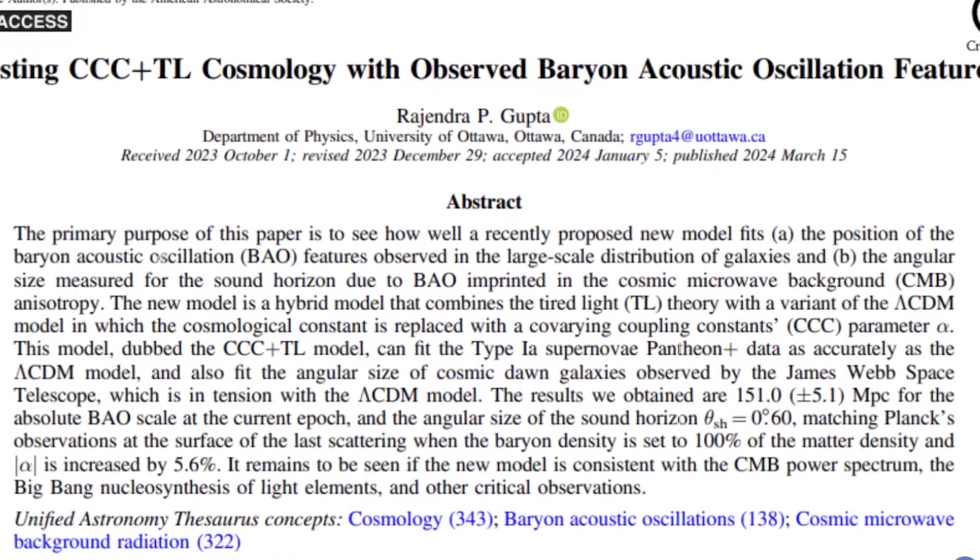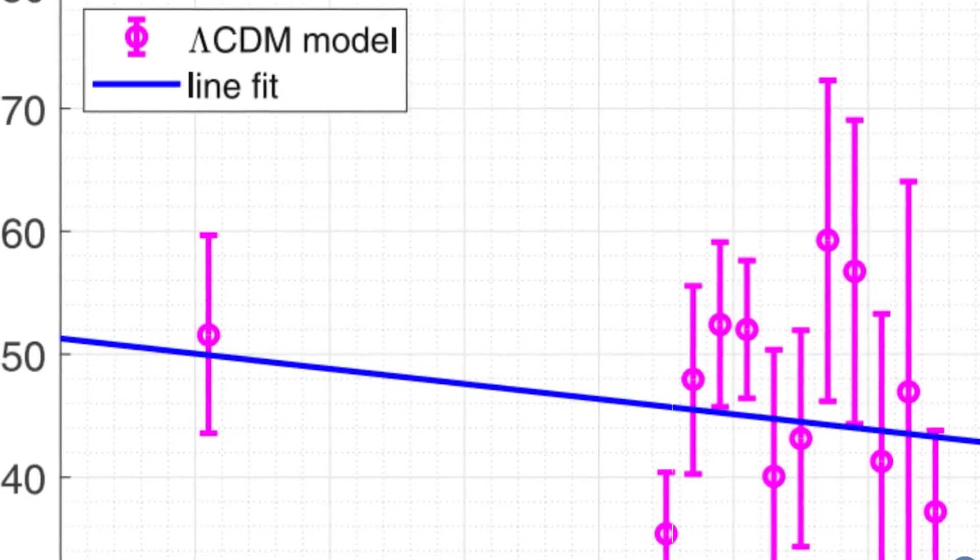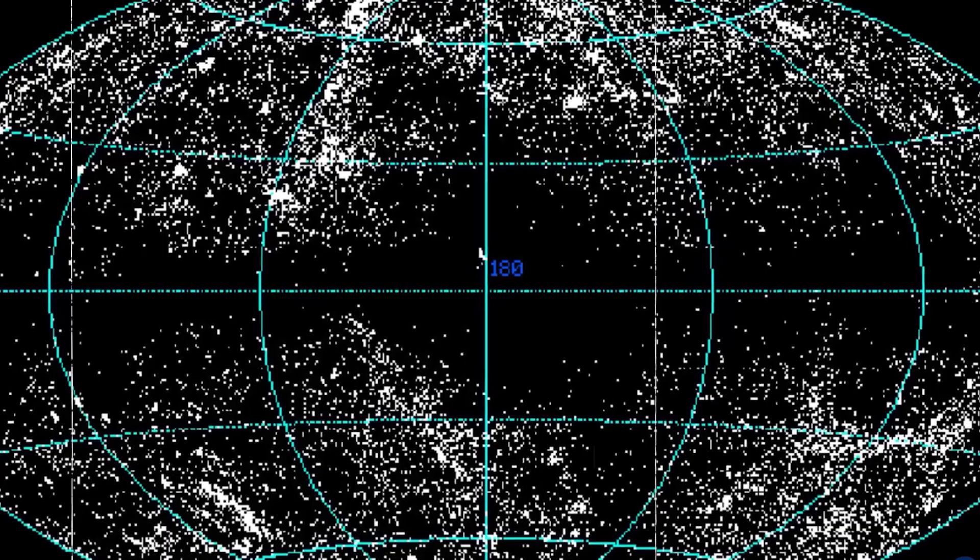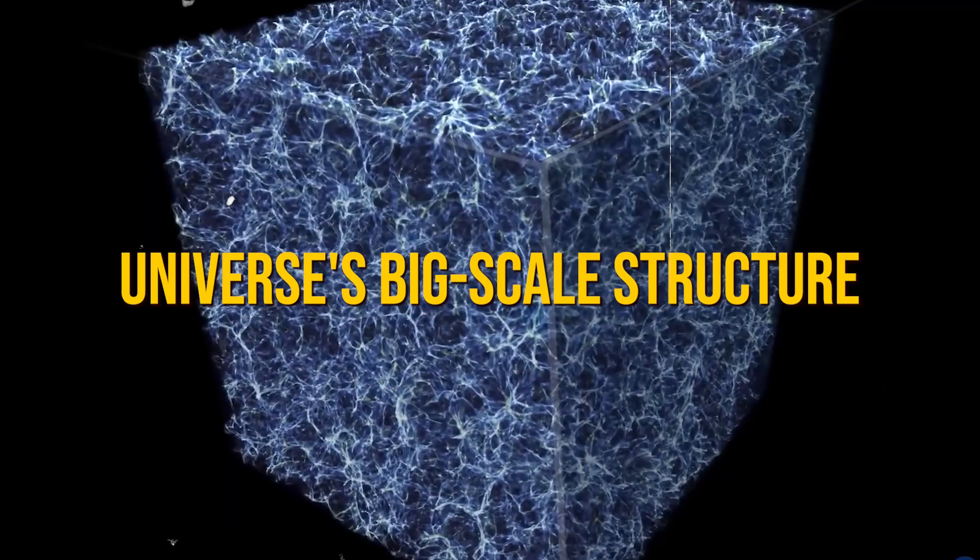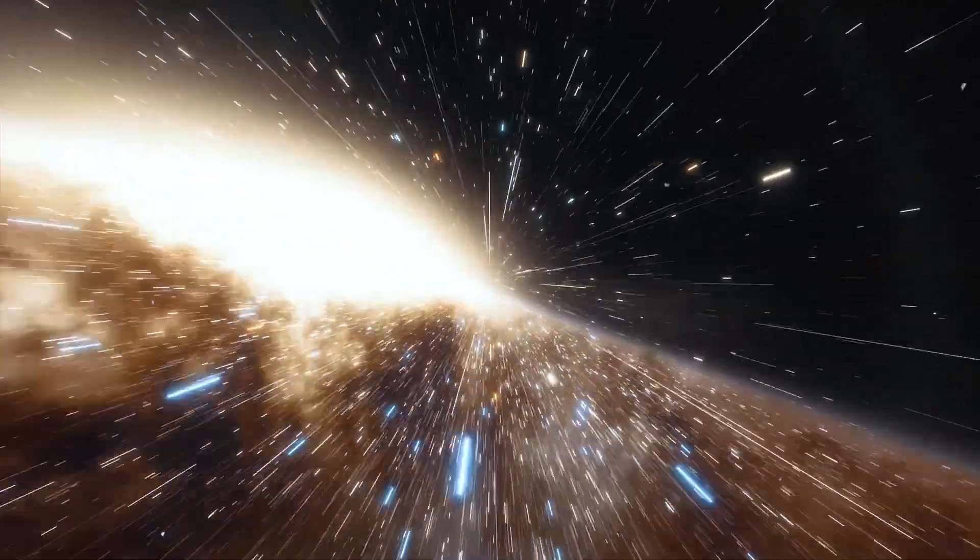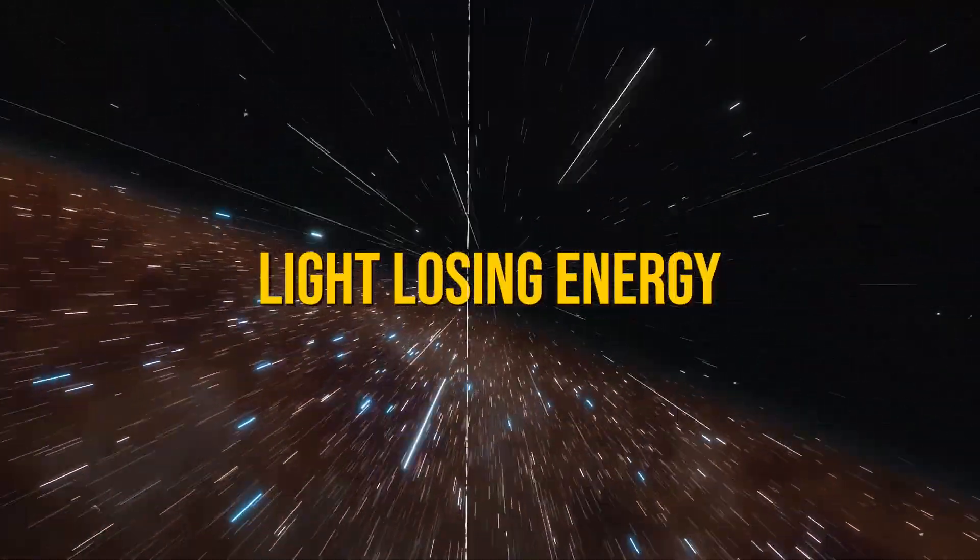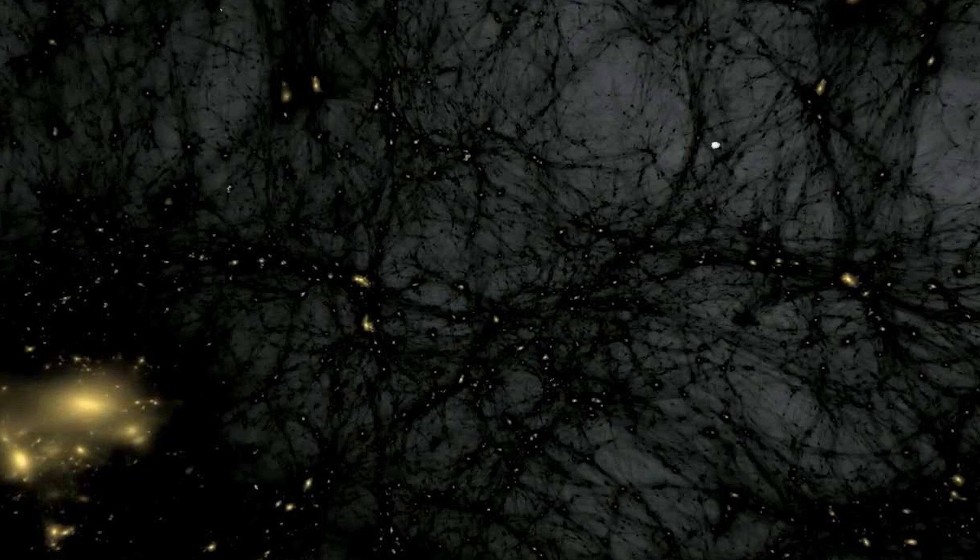How did Gupta reach this groundbreaking conclusion? By carefully testing the triple C plus tired light model with real data, including recent observations of how galaxies are spread out and the cosmic microwave background, he found that the universe's big scale structure and how light behaves over vast distances can be fully explained by forces weakening over time and light losing energy. This means we might not need dark matter after all.